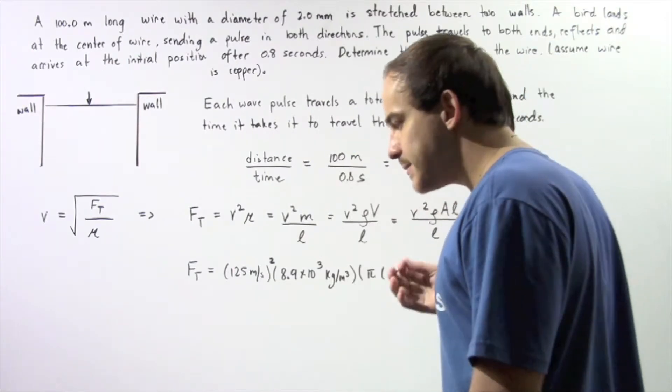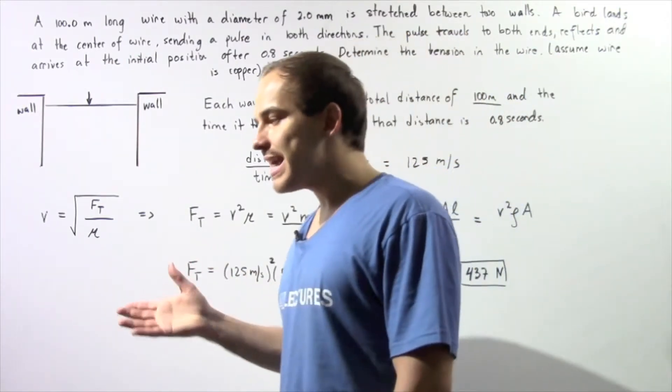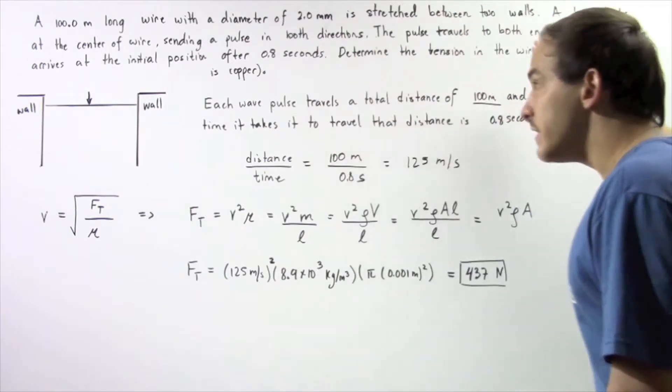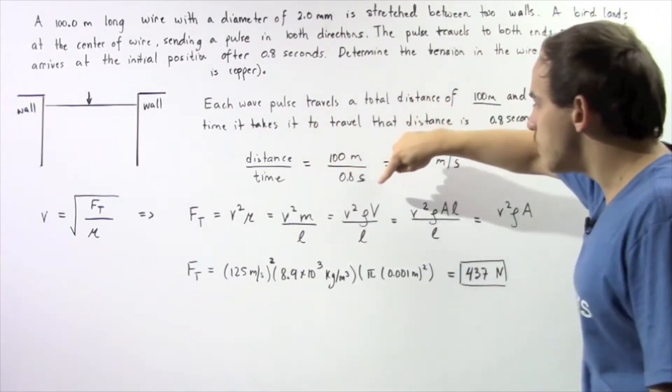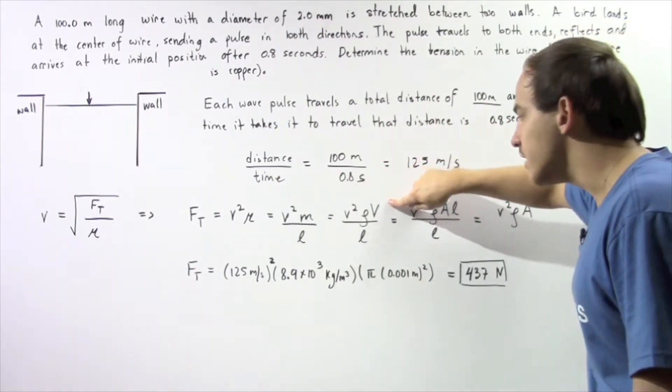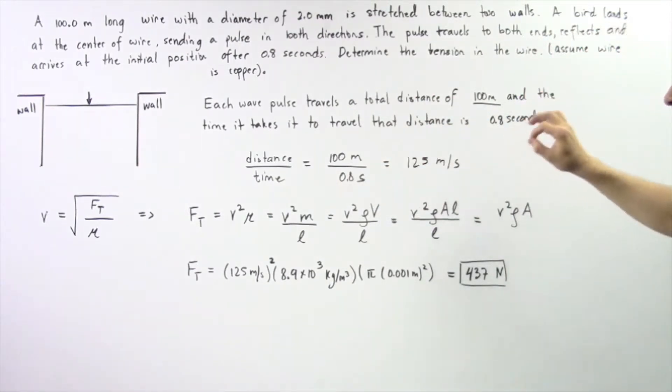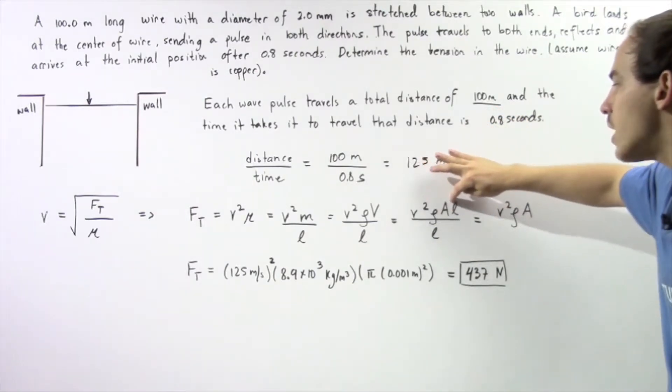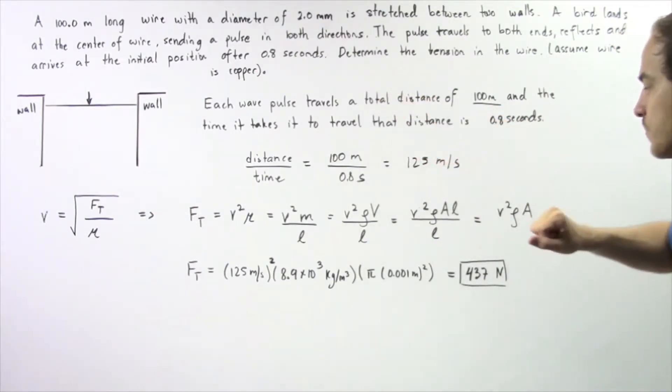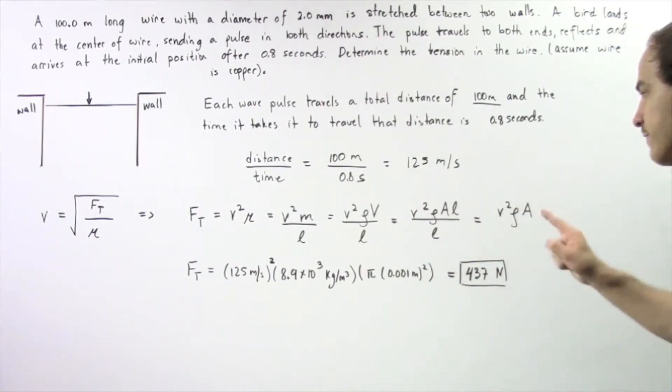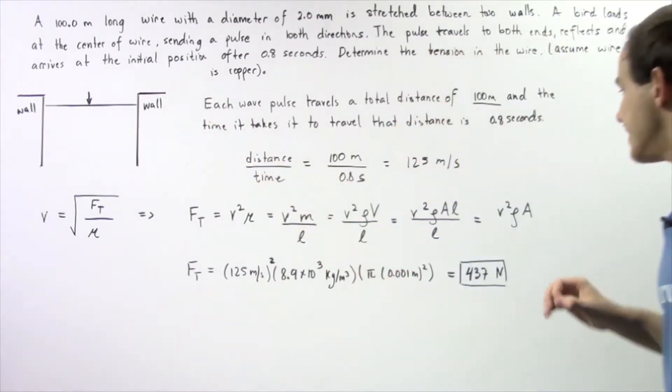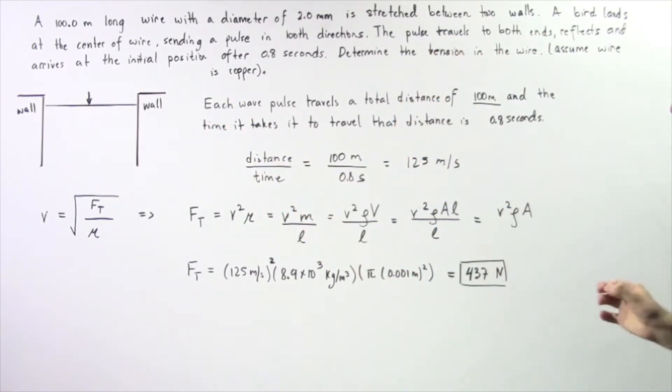Now what exactly is mass in terms of density and volume? Notice we're not given what the mass is but we know that mass is equal to the product of density and volume. And since volume is equal to the product of the length and the cross-sectional area of the wire, notice we have the following result. So the L's cancel and we're left with our tension in the wire equal to the product of our cross-sectional area, our density, and our velocity squared.